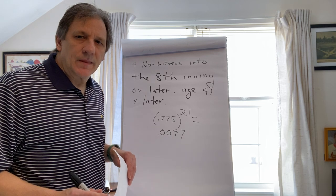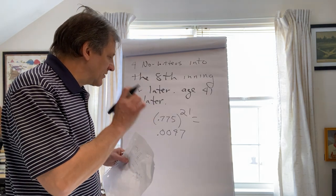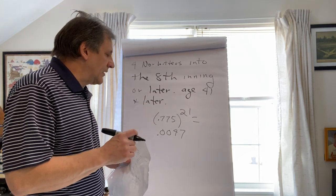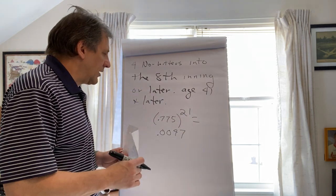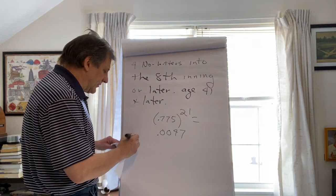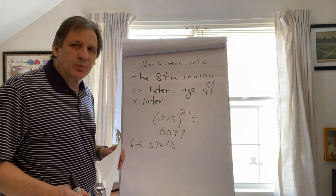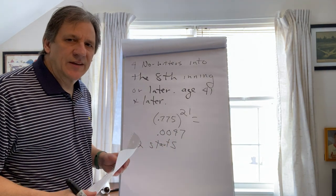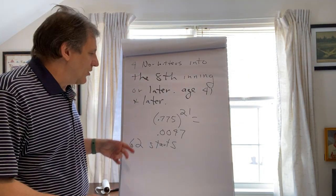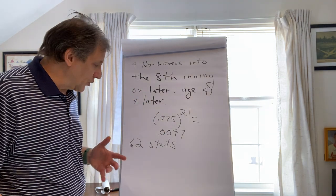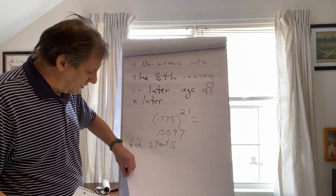So there's a .0047 chance of getting a no-hitter through seven innings. Now, he made 62 starts. We want to find the probability of getting four no-hitters or more through 62 starts. That's where we use the binomial distribution.